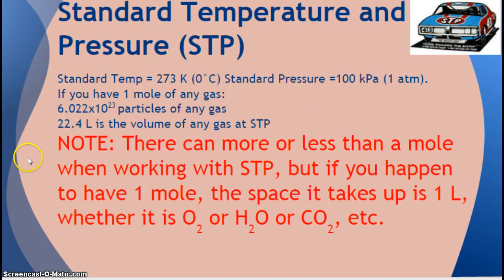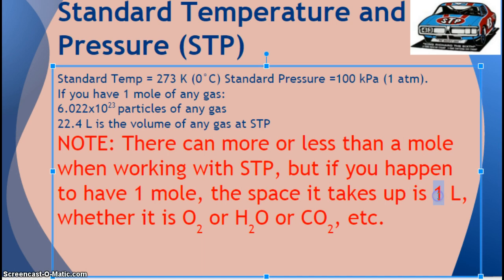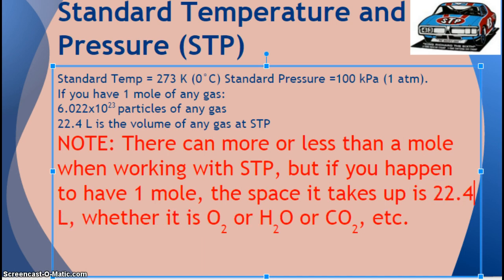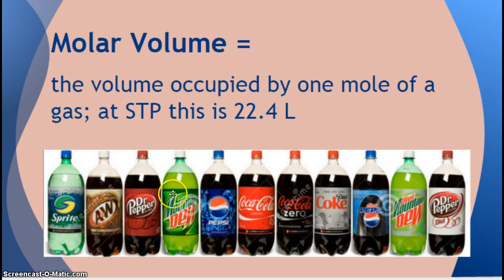Side note, there can be more or less than 1 mole when working with STP. But if you happen to have 1 mole, the space it takes up is how much? 22.4 liters. Whether it's oxygen or steam or carbon dioxide, it doesn't matter what gas it is. If it's at STP and you have a mole, it takes up 22.4 liters.